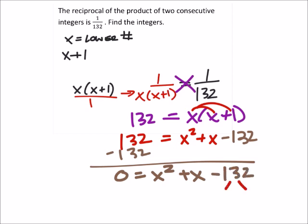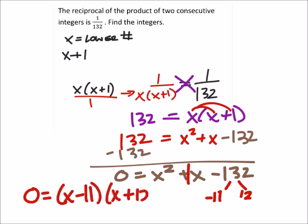And we get 0 equals x squared plus x minus 132. So let's look to split negative 132. We need two factors which would add up to 1. And right now I'm looking at negative 11 and 12. Because if I add those together, I would get the 1. So it looks like 0 equals x minus 11 and x plus 12.